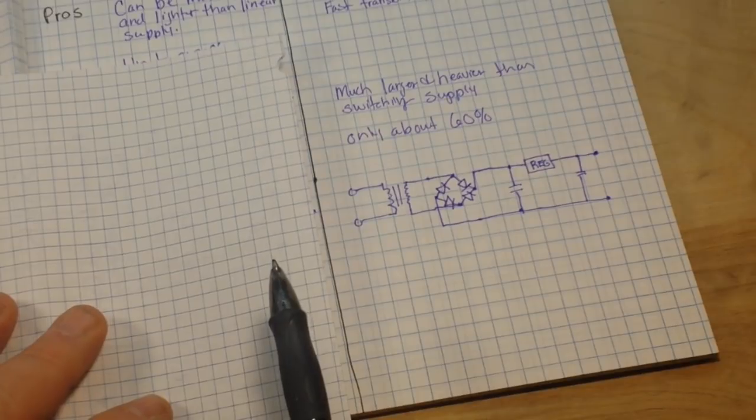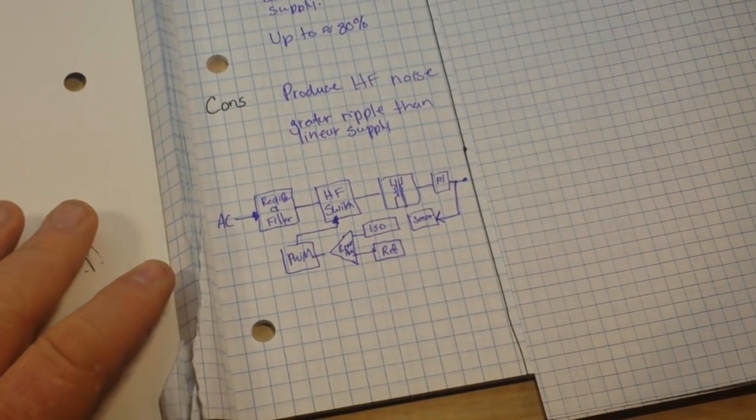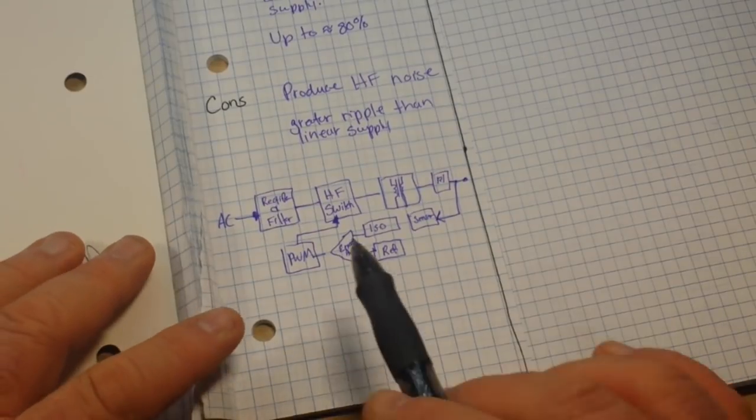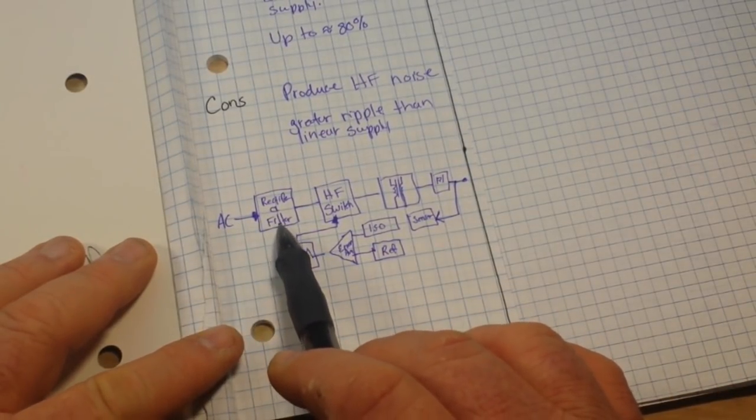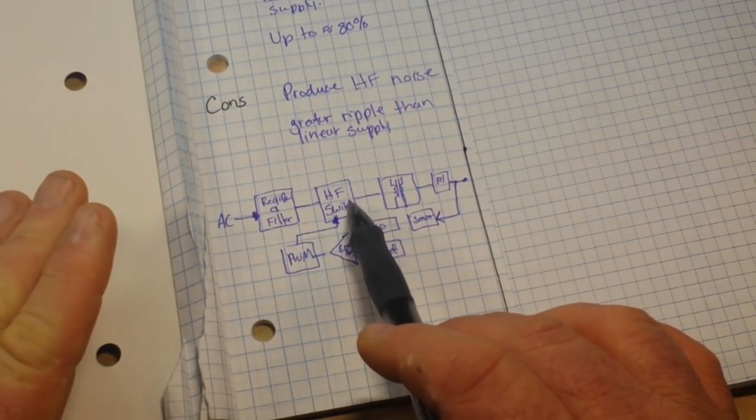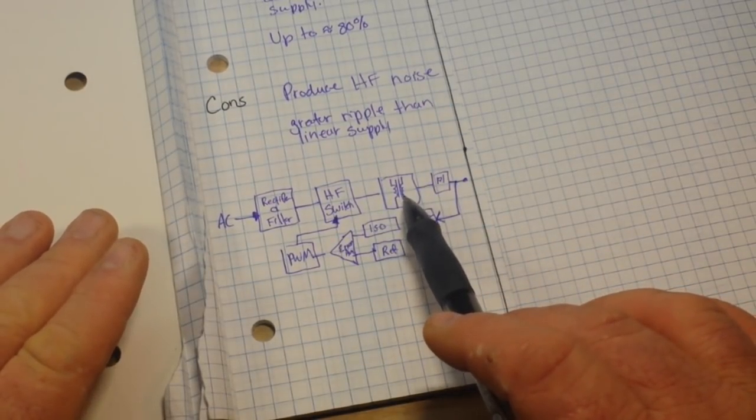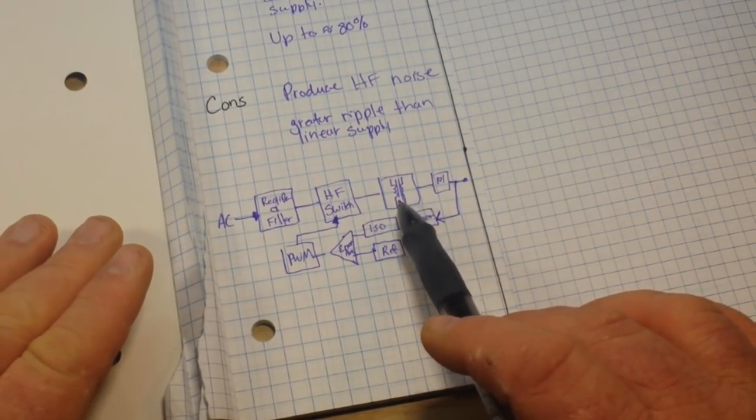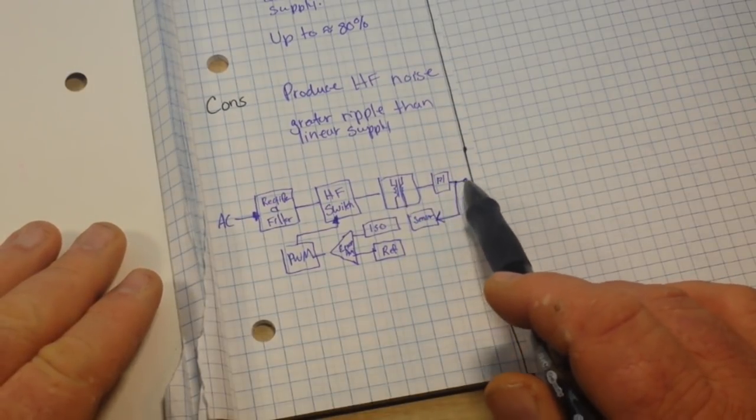Now, let's look at a switching power supply. I didn't do a schematic diagram because there's just too much to draw. But basically, your AC comes in to a rectifier and a filter. It then goes through some sort of high-frequency switch, generally a MOSFET or an IGBT. Then the transformer to step up or step down the voltage. Then it gets filtered again. And then you have your output.